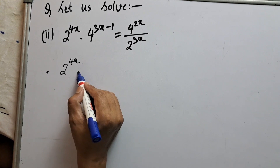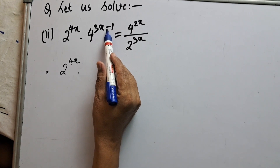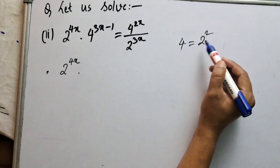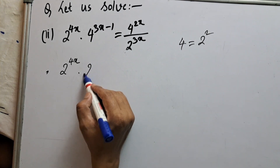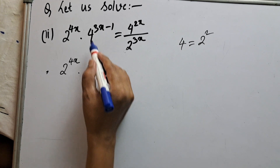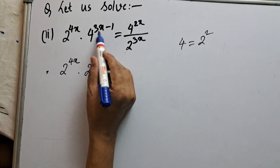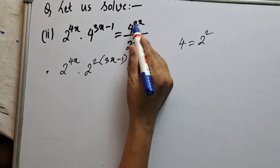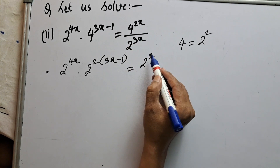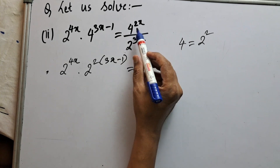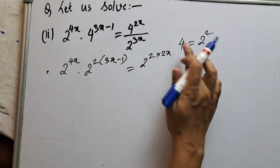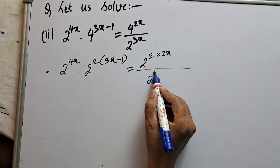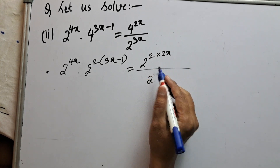We write 2 to the power 4x as it is. Now 4 to the power 3x minus 1: since 4 means 2 squared, we can write 4 as 2 squared. So we write 2 squared to the power 3x minus 1. On the right hand side, 4 to the power 2x also becomes 2 squared to the power 2x, giving 2 to the power 4x, and in the denominator we have 2 to the power 3x.